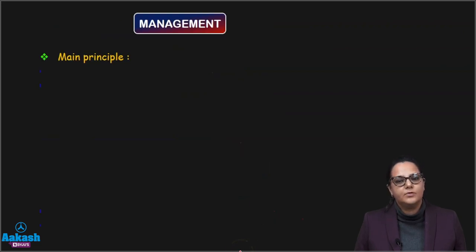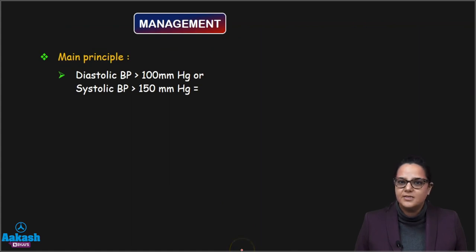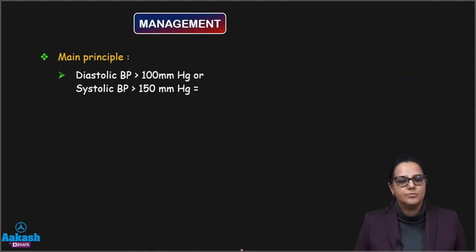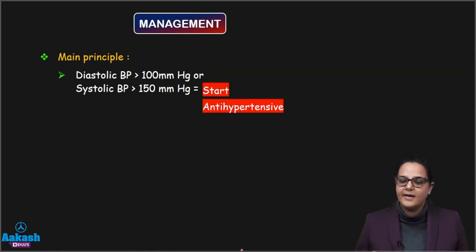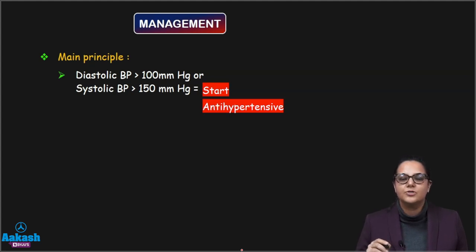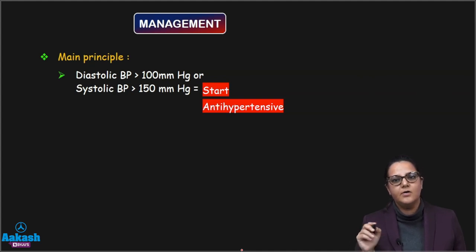Now management. The main principle: whenever the diastolic blood pressure is more than 100 mmHg or the systolic blood pressure is more than 150 mmHg — remember these two values are irrespective of each other — then we will start antihypertensives. So if the blood pressure is 150/90 or 140/100, we will start antihypertensives.